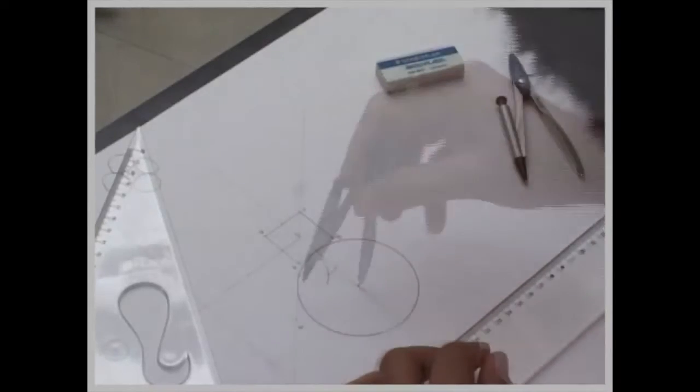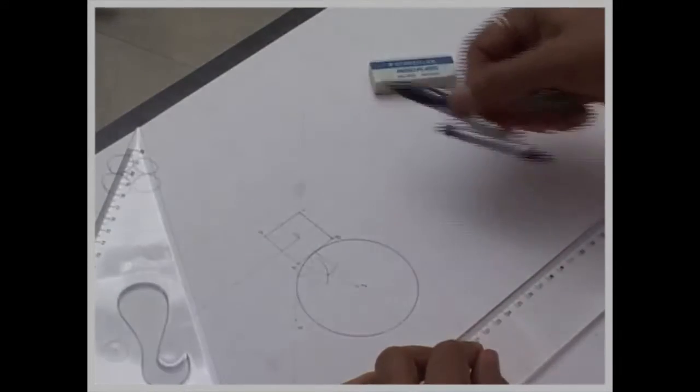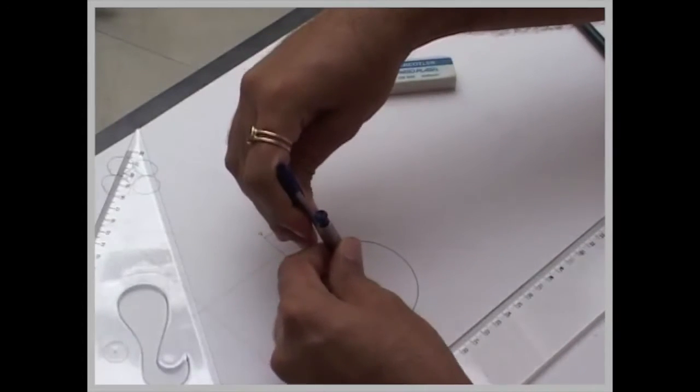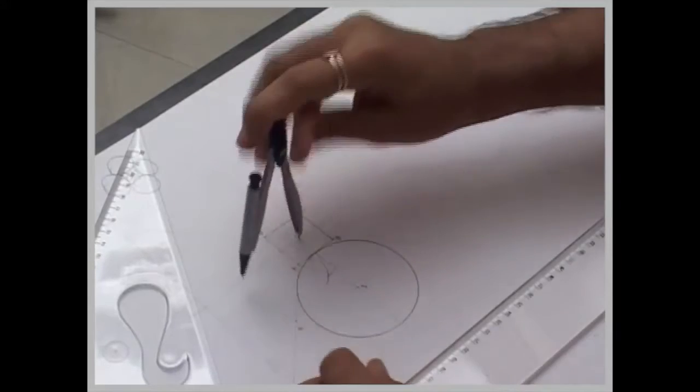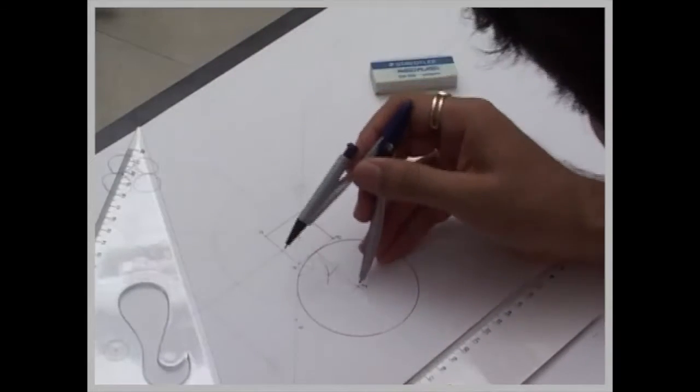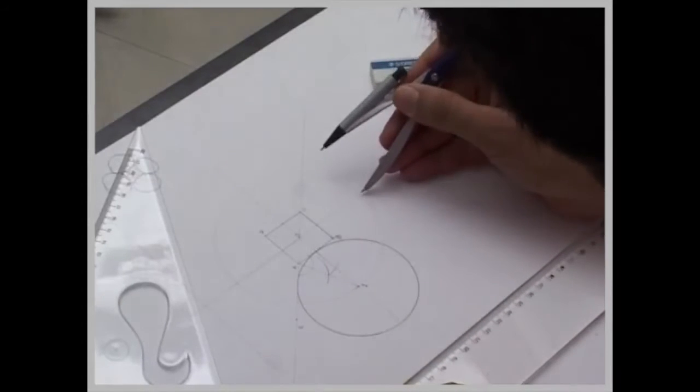Now wherever it will cut, take this much radius and draw a circle. Name this point as 1. Now what we have to do, same thing. Now we will take O to 1, draw a circle, we will take the same radius from here.